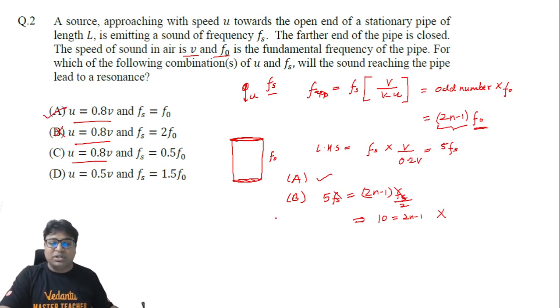Let's go with C now. If we check option C, again u equals 0.8v, so left hand side still remains the same, and we are going to get (2n-1) times f_naught. And f_naught will be equal to fs divided by 0.5, so that would be 2fs. So again, fs gets cancelled, and this time what we are getting is odd number times even number will become an even number, and even number cannot be equal to 5. So again this becomes wrong. So C is wrong.